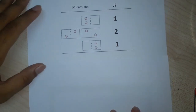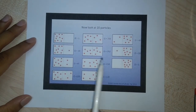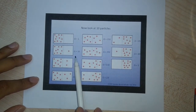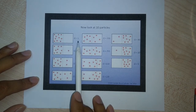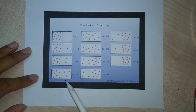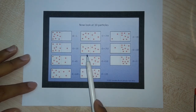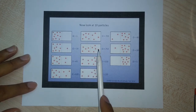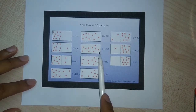Now consider 10 balls in a box. The number of microstates for each arrangement varies: all balls on the left has Ω = 1, one ball on the right has Ω = 10, and it keeps increasing. The most probable arrangement — equal numbers of balls on both sides — has the highest number of microstates, equal to 252. So the probability of that arrangement is by far the greatest.